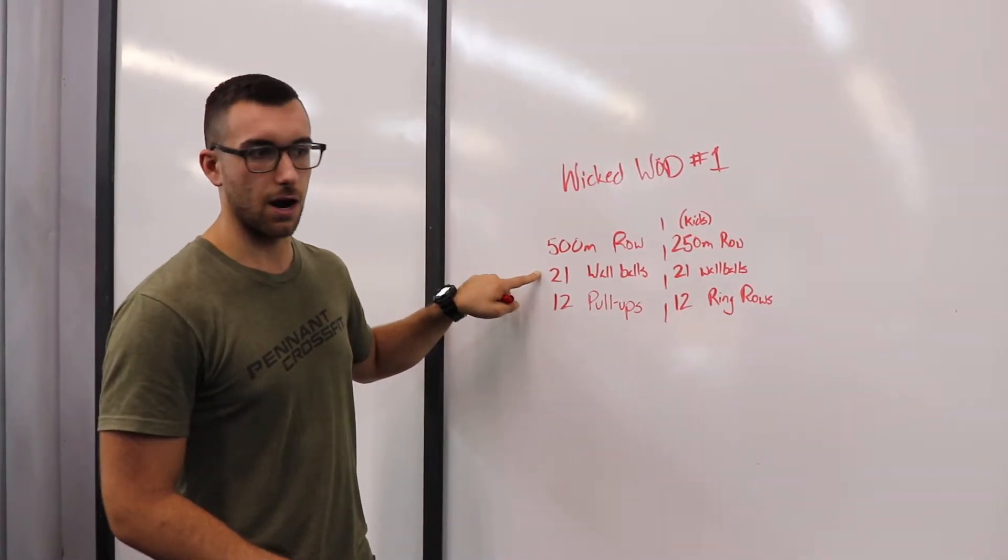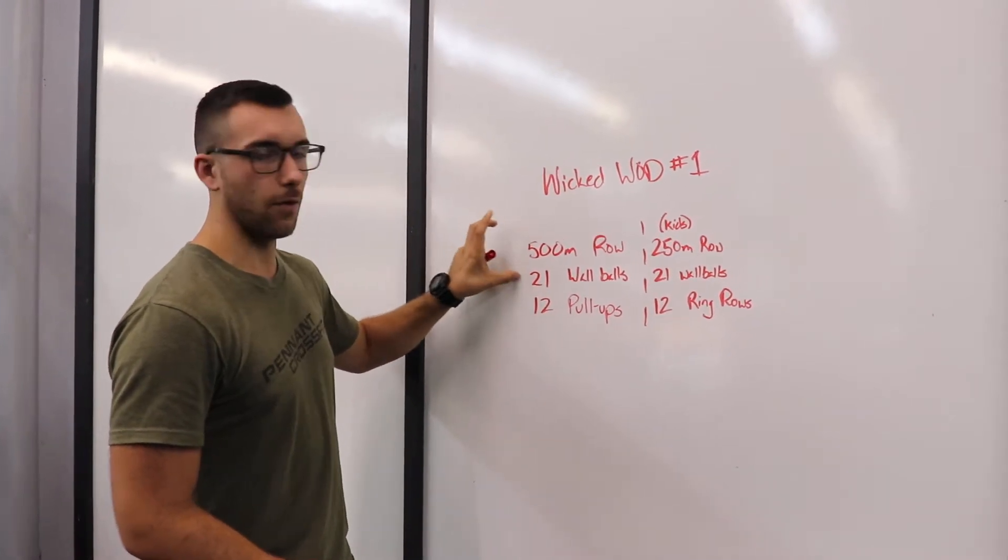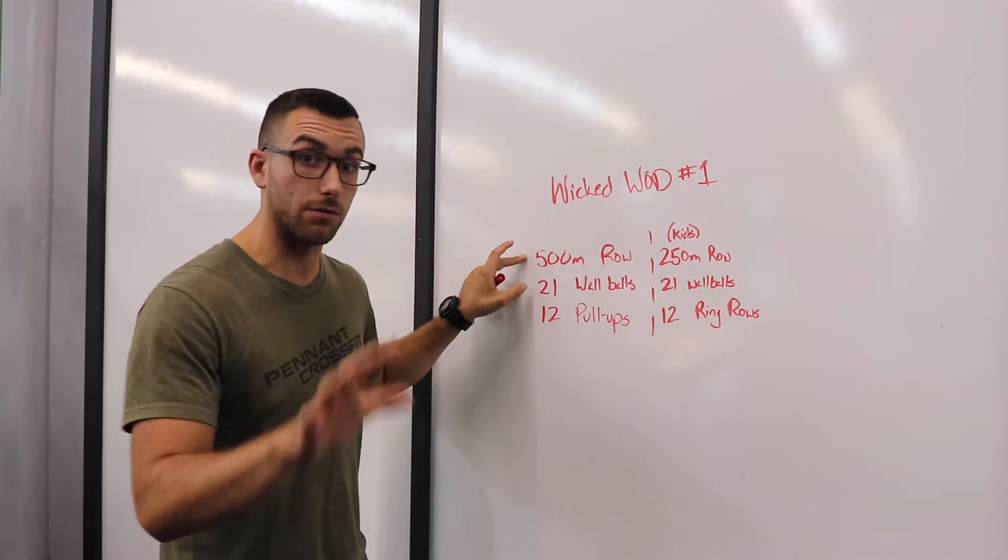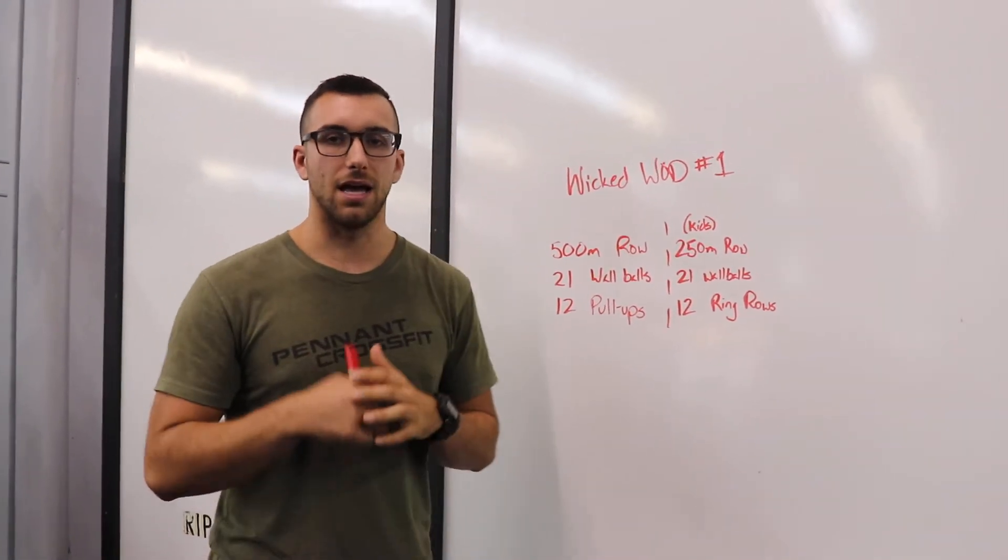But let's say that they're a little held up at those wall balls. You can't move on from your rower—you can be done rowing but you can't start your wall balls until that partner is done.